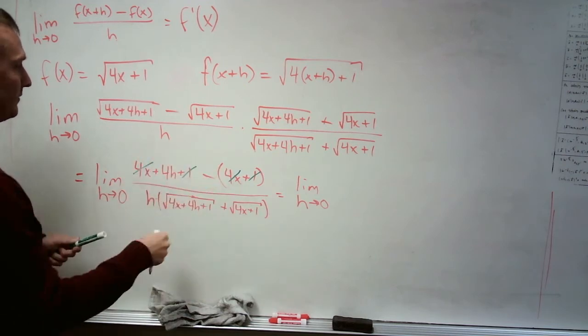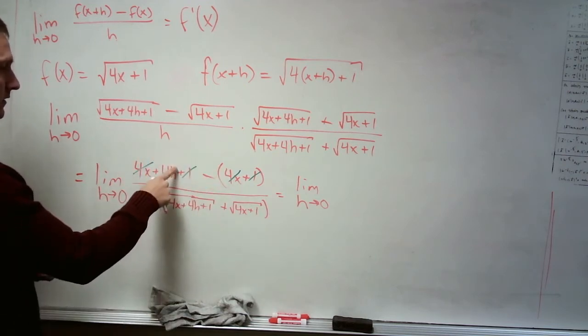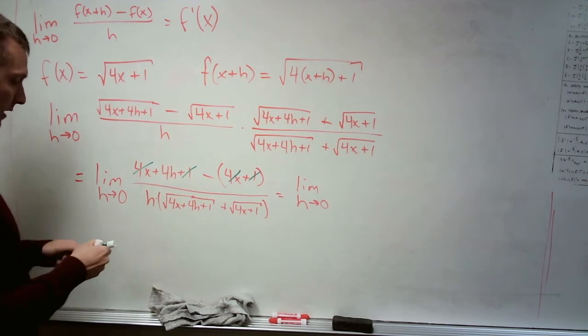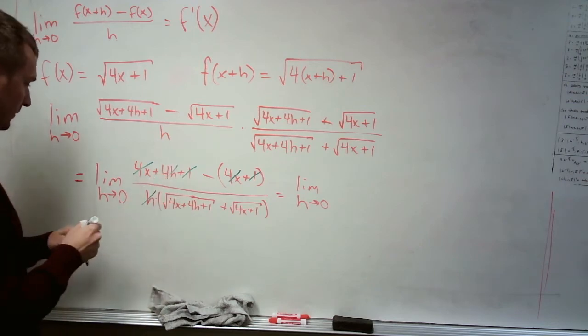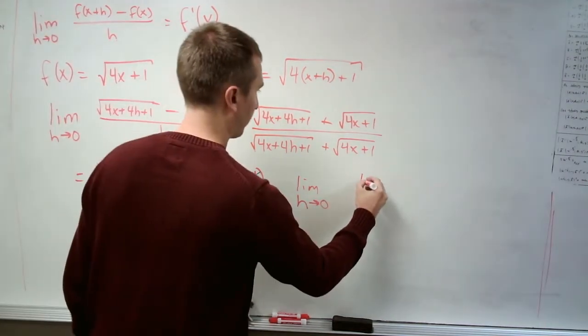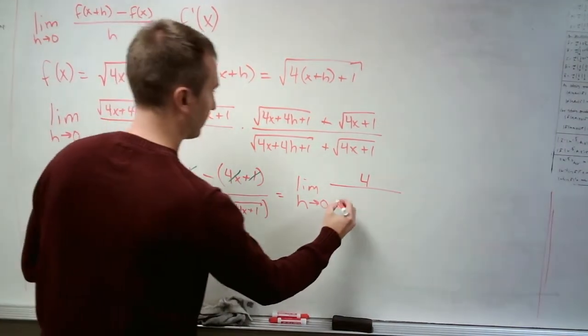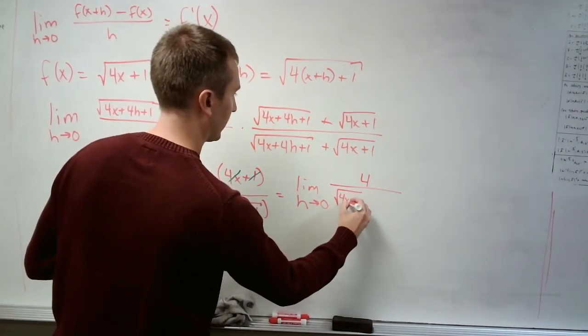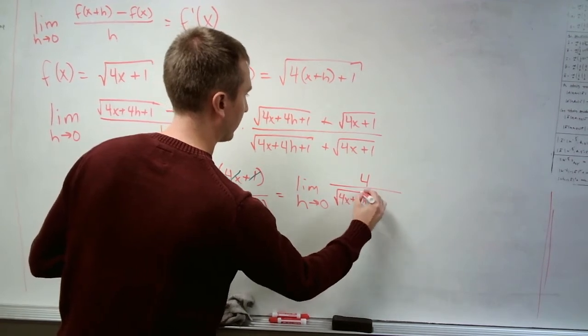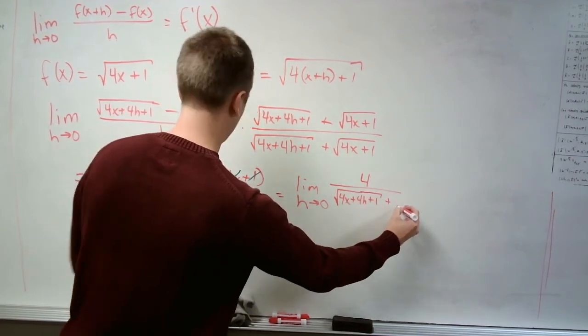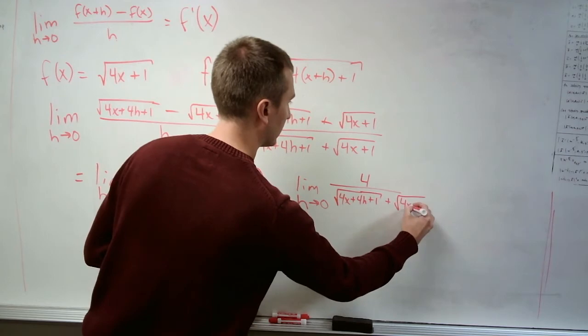Up top, all we have is just 4 times h, so we can cancel that factor of h from bottom and from top. We're left with just 4 divided by f of x plus h, which is root 4x plus 4h plus 1, plus f of x, which is just root 4x plus 1.